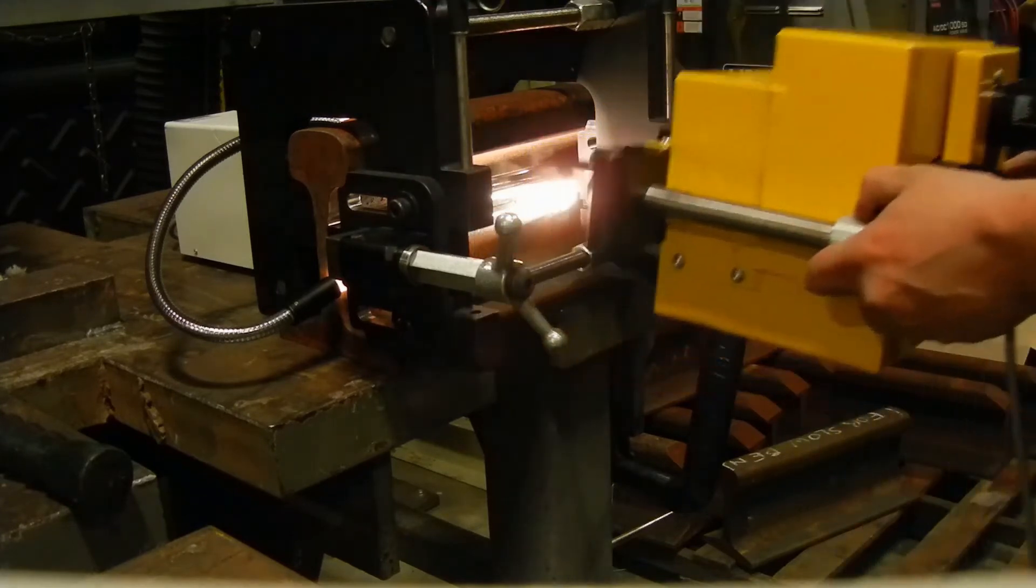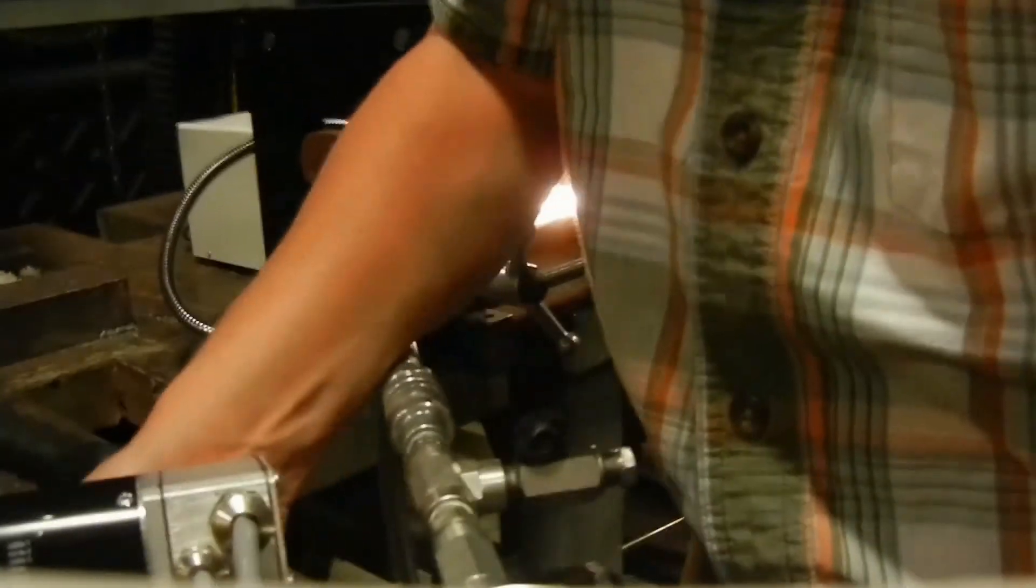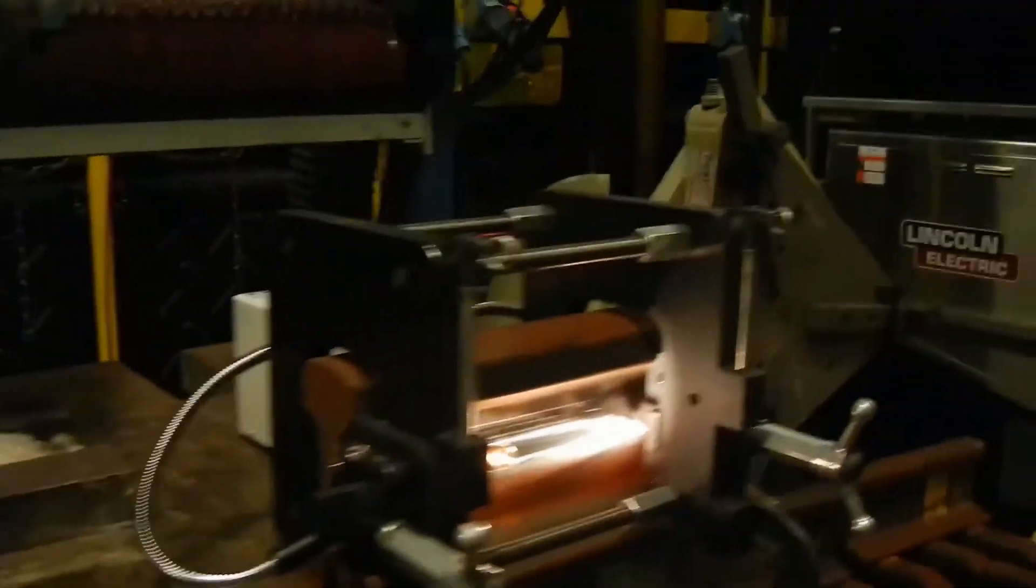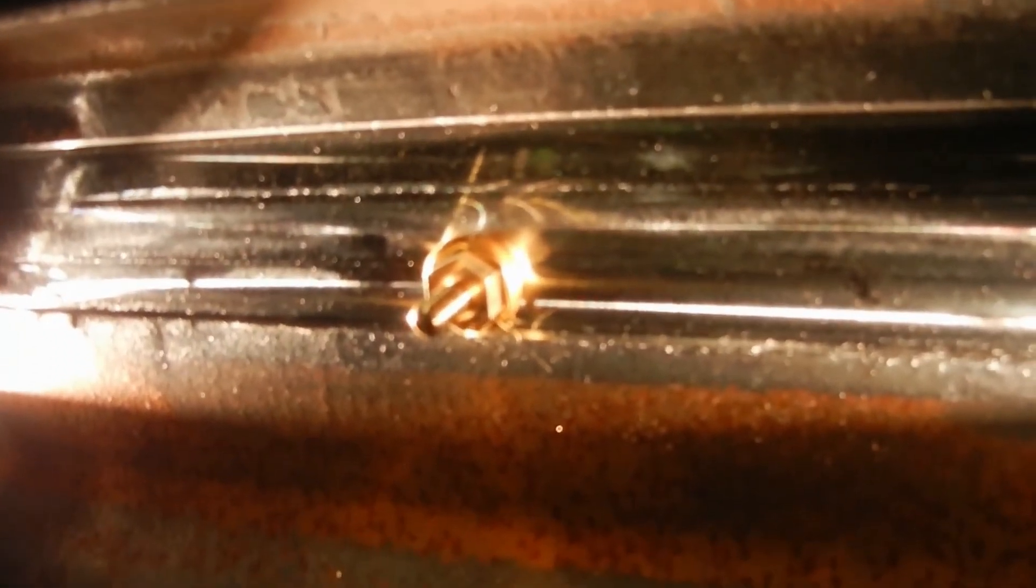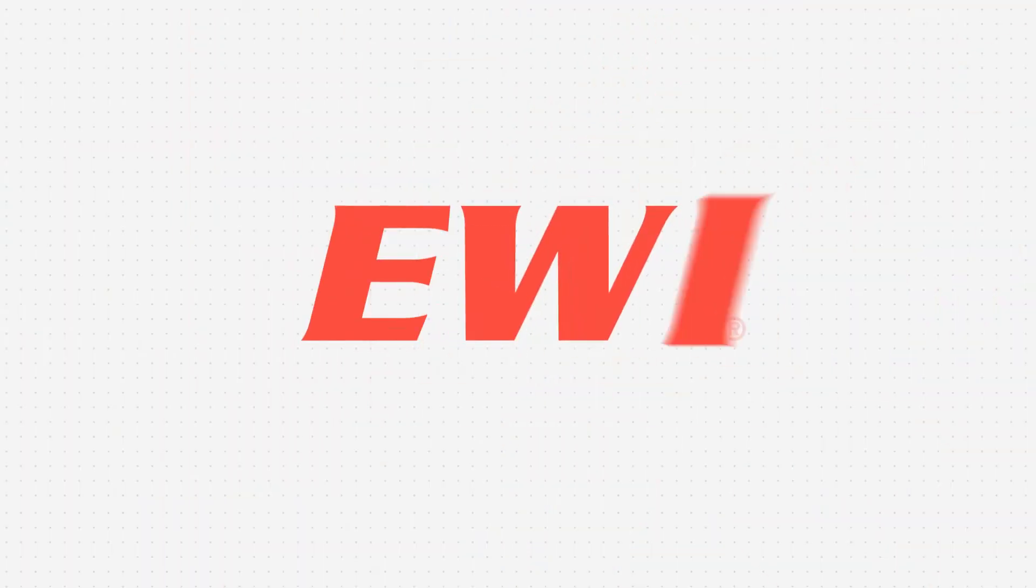So when we show the weld itself you'll notice that there's a machined band there. In preparation for the weld to be placed on the rail we do have to spot face the side of the rail to make a flat clean spot to make the weld on.